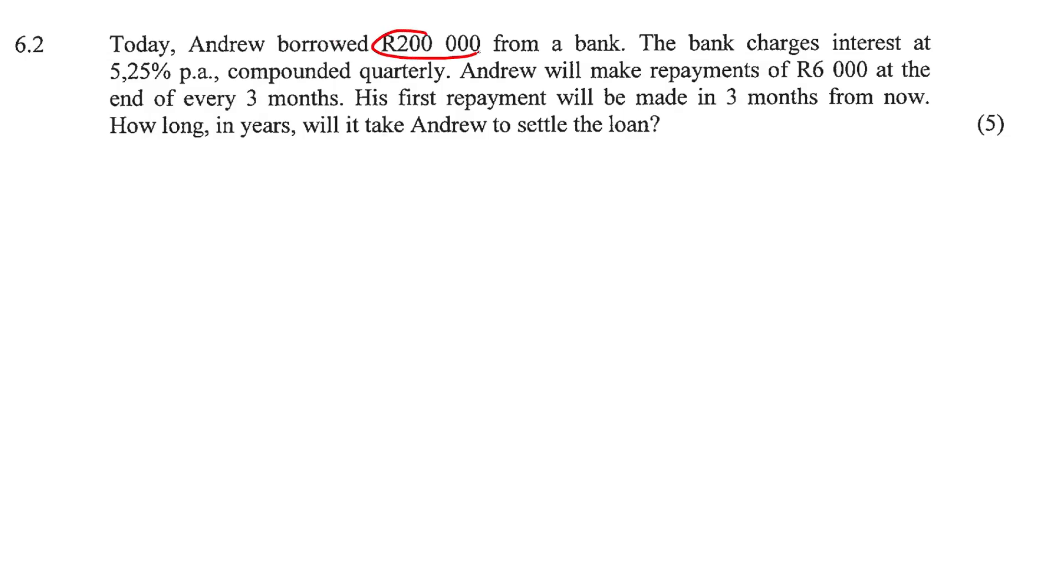This 200,000, is that money that Andrew will have today or in the future? Today. So we're gonna use the present value formula. This is just a single bracket. So the amount that he wants to borrow is 200,000. We'll put that in the place of P.